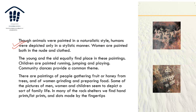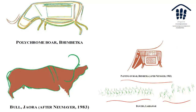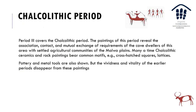Animals are painted in a naturalistic style, but humans were depicted only in a stylistic manner. Women are painted both in the nude and clothed, and young and old equally find place in these paintings. Children are shown running, jumping, and playing; there are community dances. There are paintings of gathering fruit and honey from trees, of women grinding and preparing food, and scenes depicting family life. In many rock shelters we find handprints, footprints, and dots made by fingerprints as well.